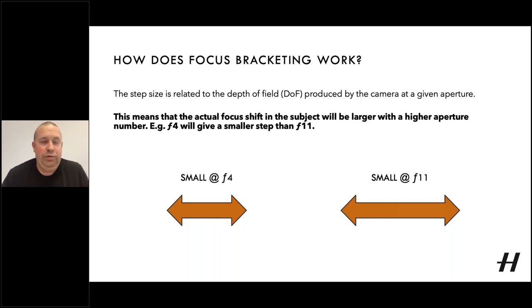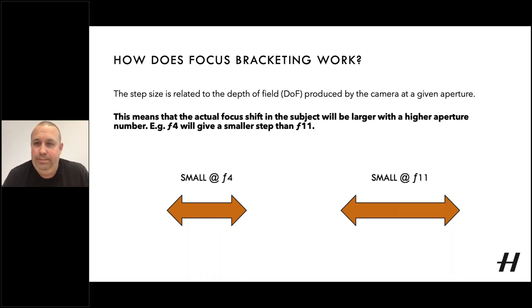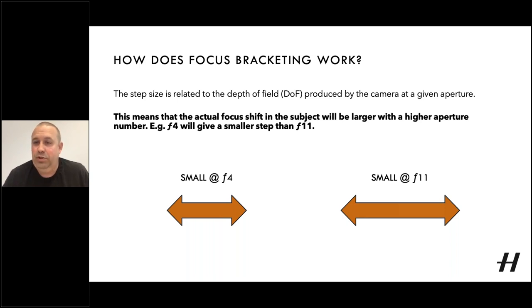This means that the actual focus shift in the subject will be larger with a higher aperture number. For example, F4 will give a smaller step than F11. Both arrows in the diagram represent the small step, but it's a much smaller step at F4 than at F11. Therefore, before each exposure, the camera will automatically calculate the actual step size using the current focus position, focal length of the lens, aperture and pixel dimensions of the sensor. The depth of field will grow as the focus point is moved away from the camera, and the distribution of depth of field around the focus point will also be more uneven.